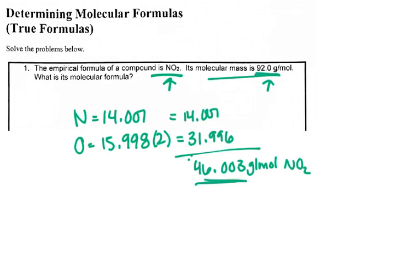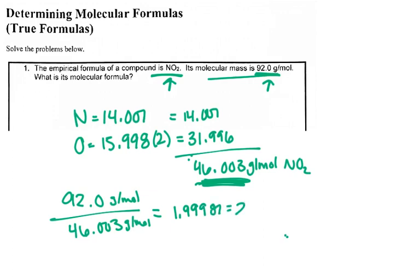Now I need to take this molar mass and compare it to the one I was given, the 92. I want to see how many times my molar mass of my empirical formula can go into my molecular formula. Your calculator answer should be like 1.99987, very close to 2. I'm going to take the formula, the NO2, and multiply it by 2 throughout, which gives me N2O4. That is my answer for molecular formula.